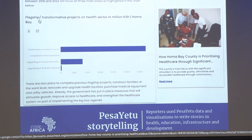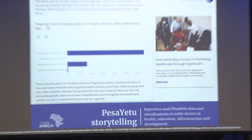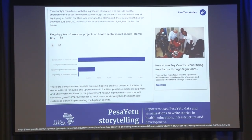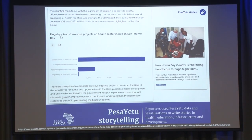Here is Pesayetu in action. We work with journalists, and they use the visualizations in their stories. For example, this story is on how Huma Bay County is prioritizing healthcare, and the journalist had taken a visualization on projects in the healthcare sector and embedded it within their story.